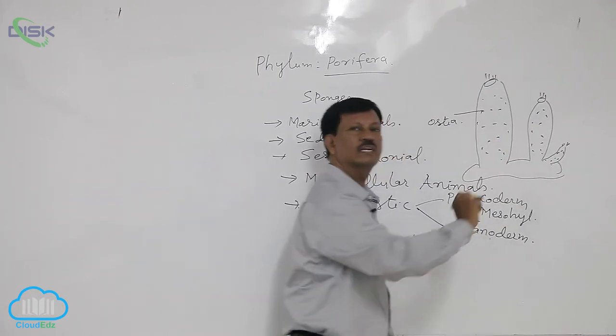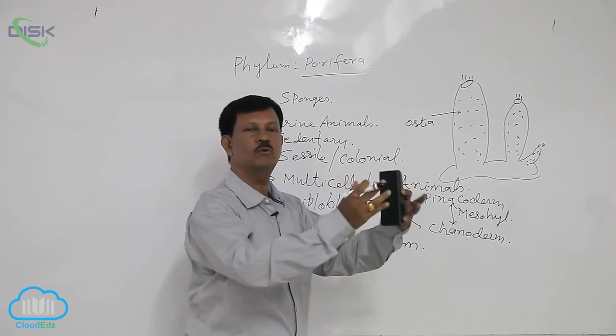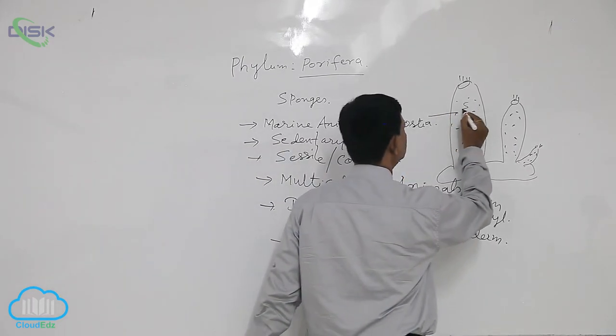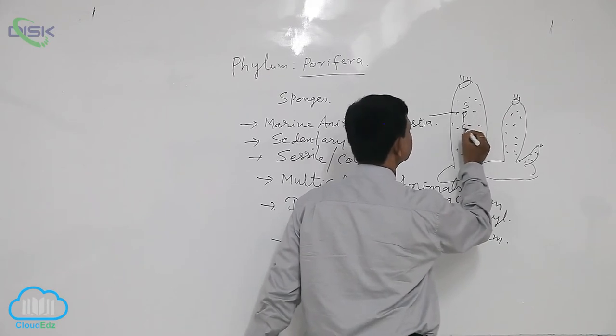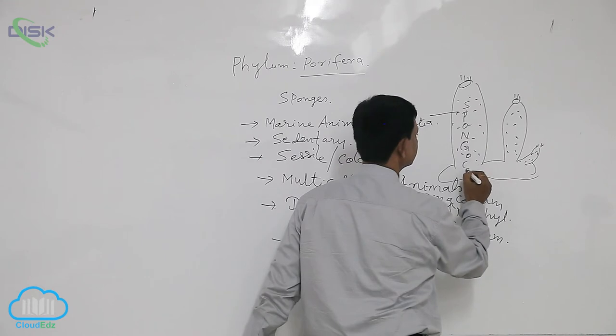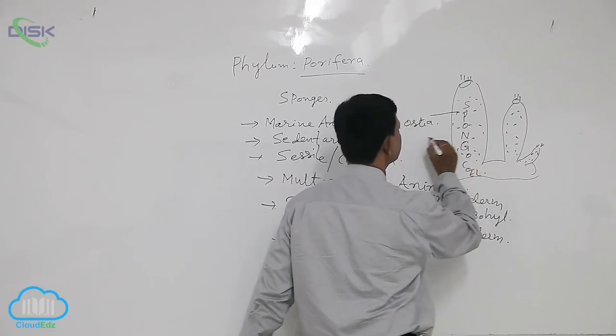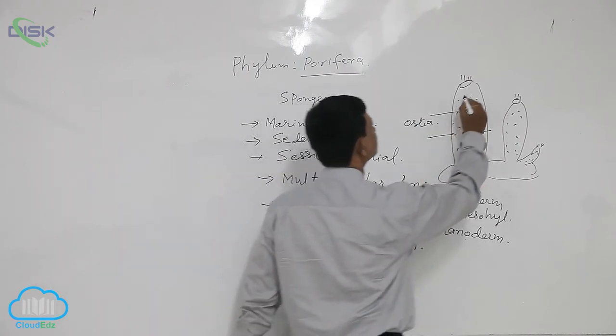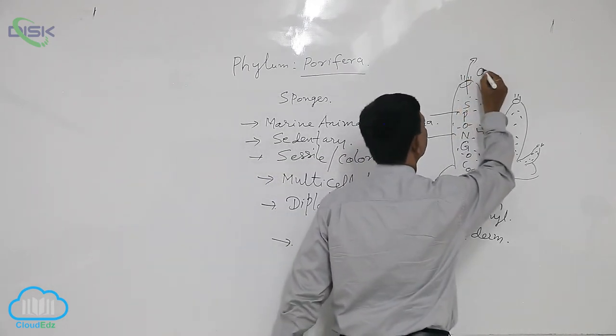There are a large number of choanocytes present in the body. These choanocytes draw marine water inside the body. Inside the body, there is a spongocoel present. It is a canal-like system. It opens to the outside by a large opening known as the osculum.